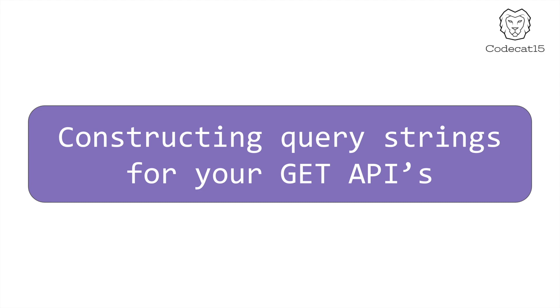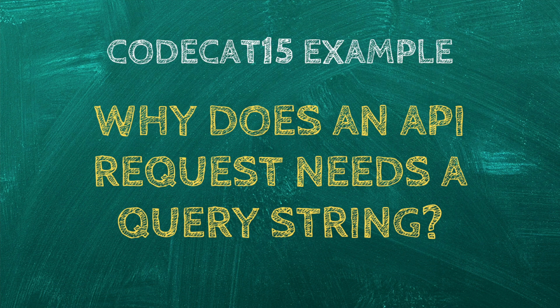When we GET data from the server, we mostly use query strings. But what is a query string? What does the server do with it and why is it important? I want to answer all these questions with an example. Let's say you go to a jeans shop to buy new jeans. The shopkeeper starts showing you many jeans. Most of the time you ask the shopkeeper some questions — like whether they have a specific brand, what discount is available, or to show jeans only in a certain price range. All your questions are inputs for the shopkeeper, letting them know what brand, discount, and price range you want. The shopkeeper then shows you jeans keeping all these parameters in mind.